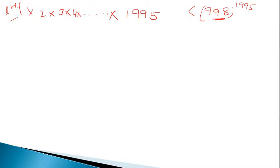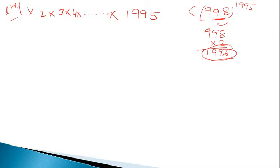Observe that 998 doubled becomes 1996. So on the left-hand side we want to produce 1996, which guides our pairing strategy.